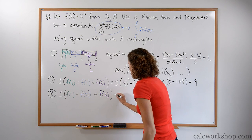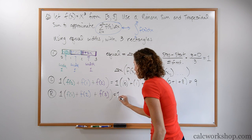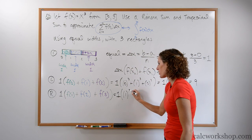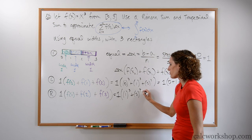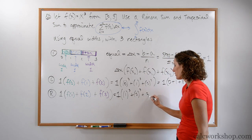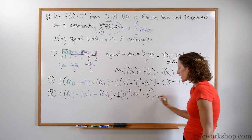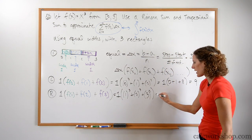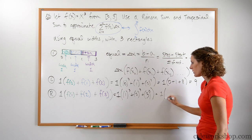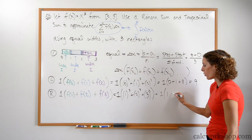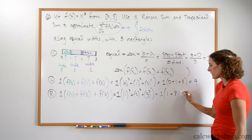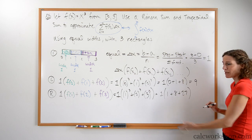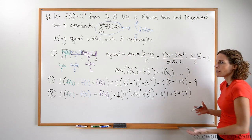We take the width, 1, times the heights — 1 cubed plus 2 cubed plus 3 cubed. If we simplify that, we get 1 times (1 plus 8 plus 27), which gives us the right-hand Riemann sum approximation of 36.